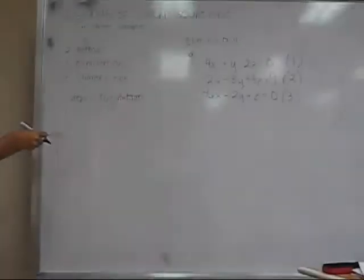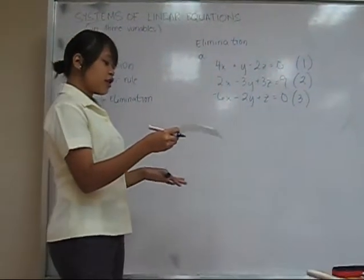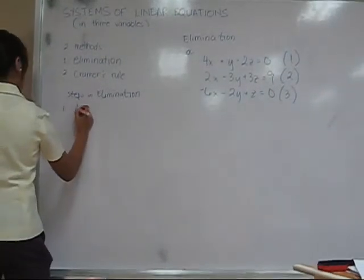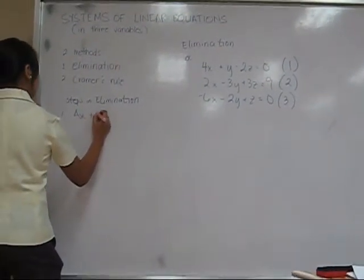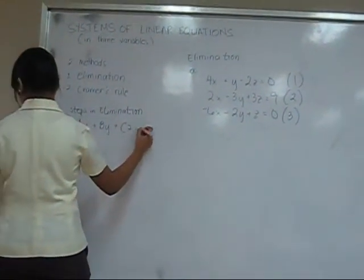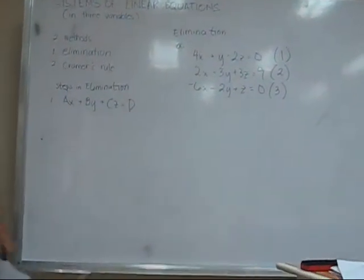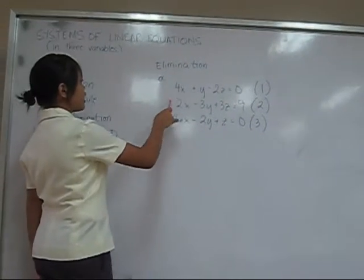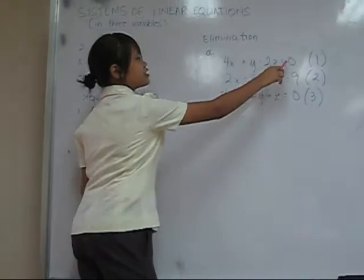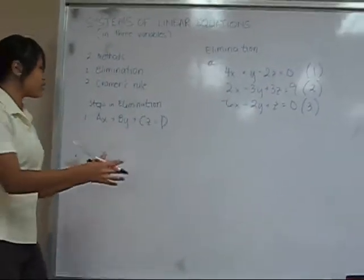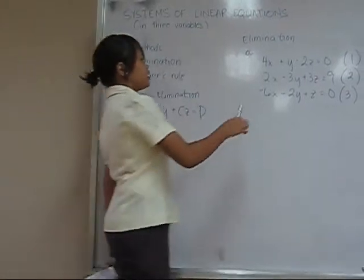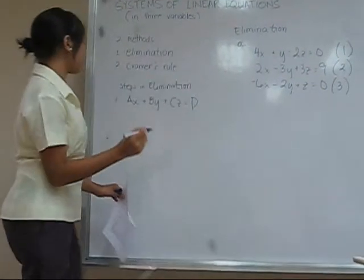First, you have to put all equations in the form ax plus y plus z equals zero — align all the variables and constants. The terms need to be arranged so they can be eliminated if needed.